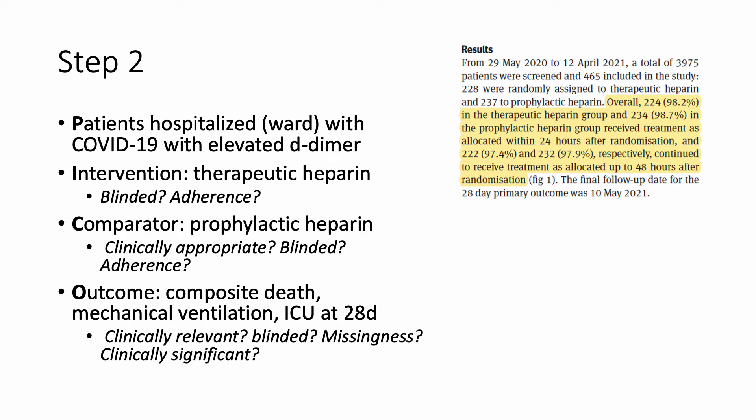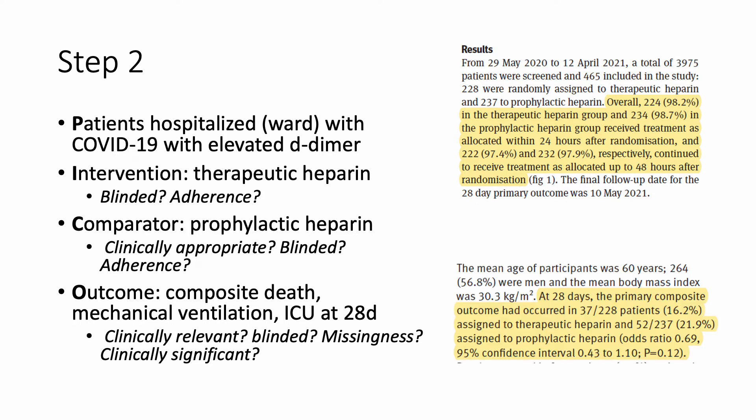Were the results clinically significant? At 28 days, the primary composite outcome occurred in 16% of individuals who received therapeutic heparin and 22% of patients who received prophylactic heparin — a 6% absolute risk reduction, which is really impressive. You can see the relative risk reduction here. The confidence intervals did cross one, but I need to give a whole other talk about why that alone doesn't mean this result is uninformative or unhelpful — that's a topic for another time.